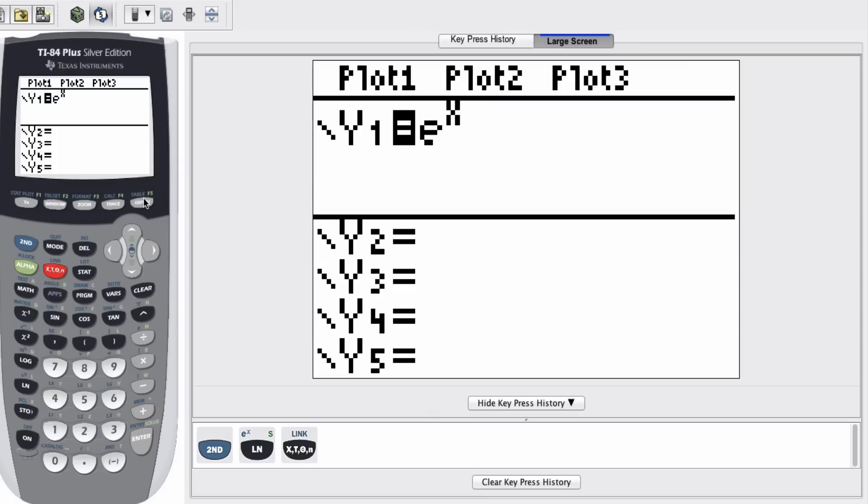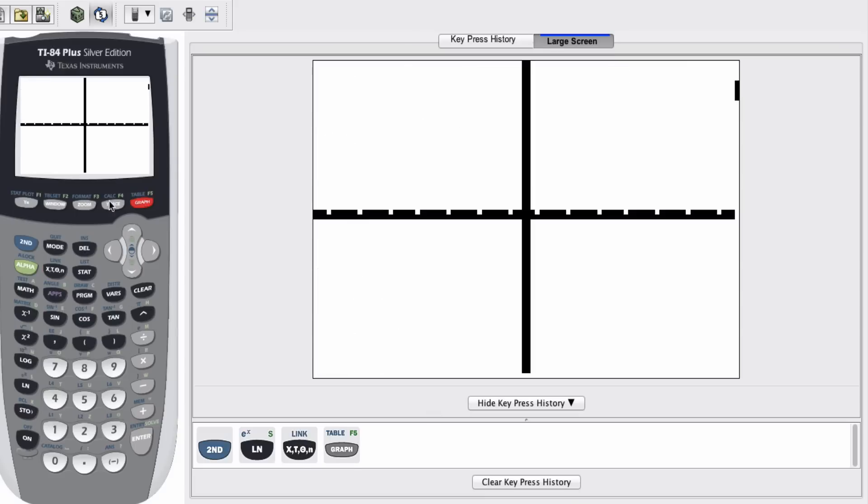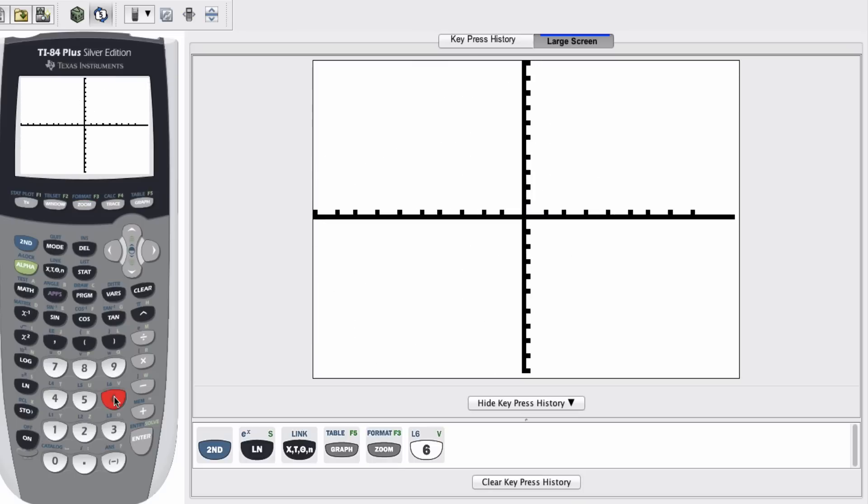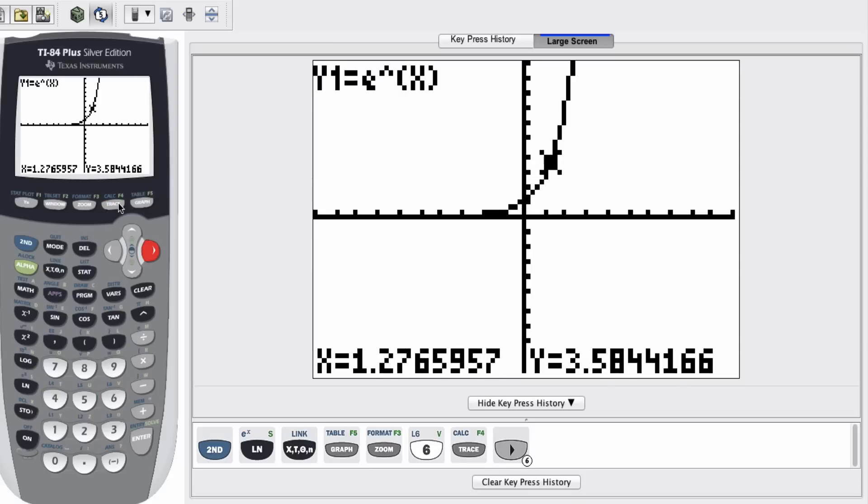So then I'm going to go ahead and press graph. And it gave me something kind of strange because my old window was strange. So I'm going to do zoom six just to make it look nicer. And we can just go ahead and see. This is what we call an exponential growth function. It's increasing quite rapidly. In fact, we're going to learn how to graph stuff like this in our next lecture. But this is what our graph of Y equals E to the X is going to look like.